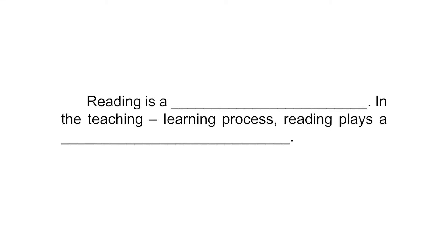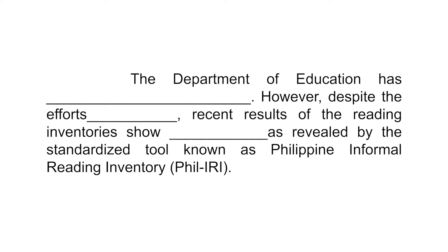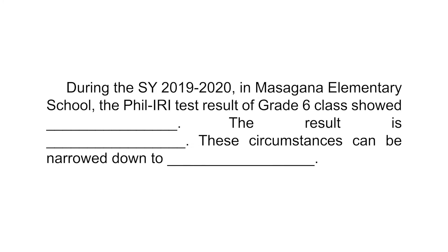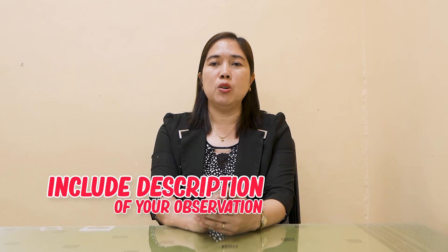If your identified problem is about reading, you may start by defining or describing reading and the role it plays in the teaching and learning process. You may cite programs, projects, and activities initiated by the Department of Education, and include facts and figures whenever applicable. Then slowly shift to presenting the issues by stating some data to establish your problem, going more specific. If division-wide data about your problem is available, it would help connect the scenario in your school, until you present your own unique problem including your observations about the phenomenon.